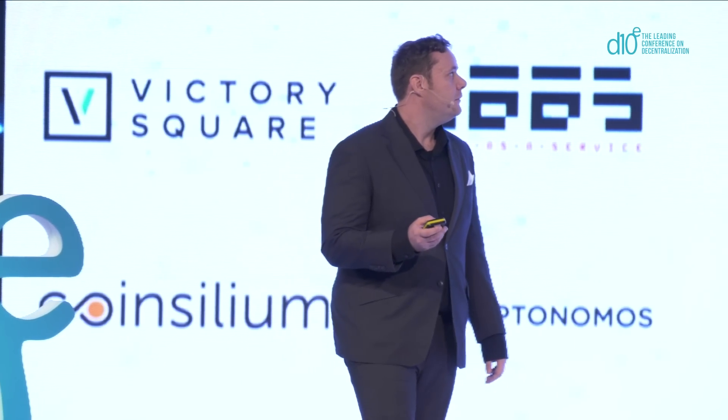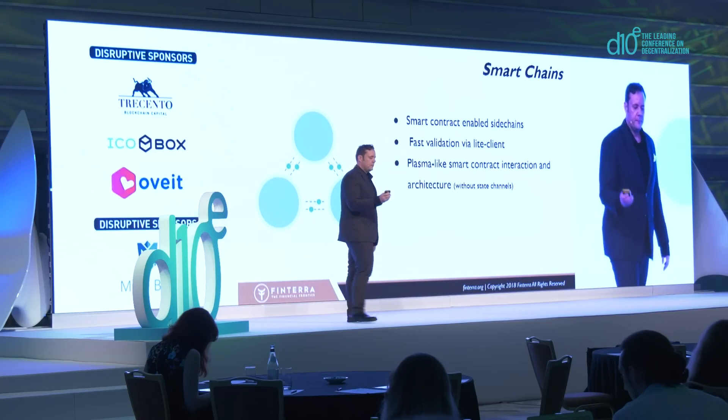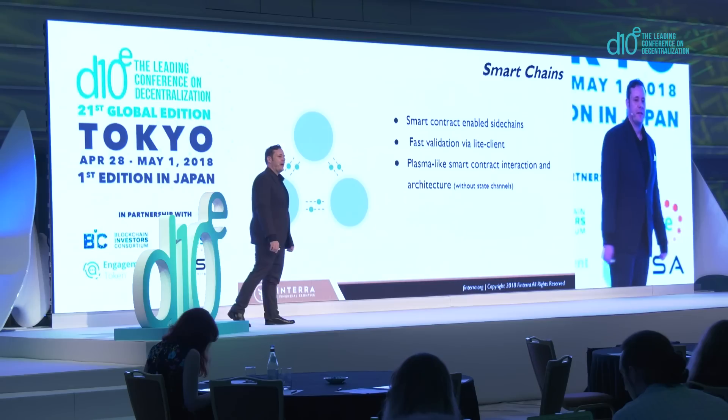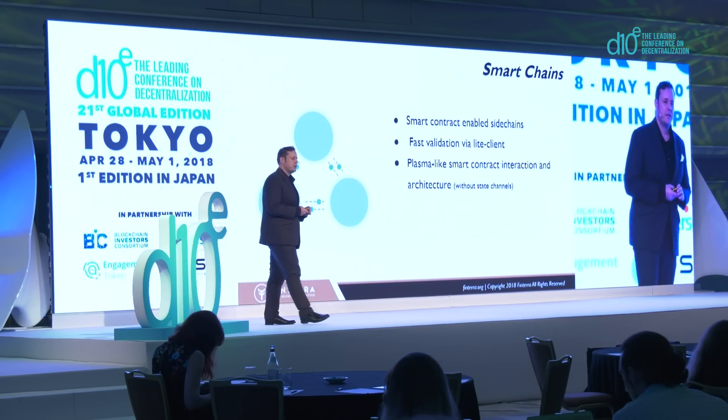So what are smart chains? Smart chains are essentially smart contract-enabled side chains. If you don't know what a side chain is, essentially a side chain is a separate network, a separate blockchain that communicates with another chain to transfer value back and forth, and it does this via a very efficient light client for transaction validation. We also use plasma-like smart contract interaction. Plasma uses smart contracts to communicate between blockchains using state channels.